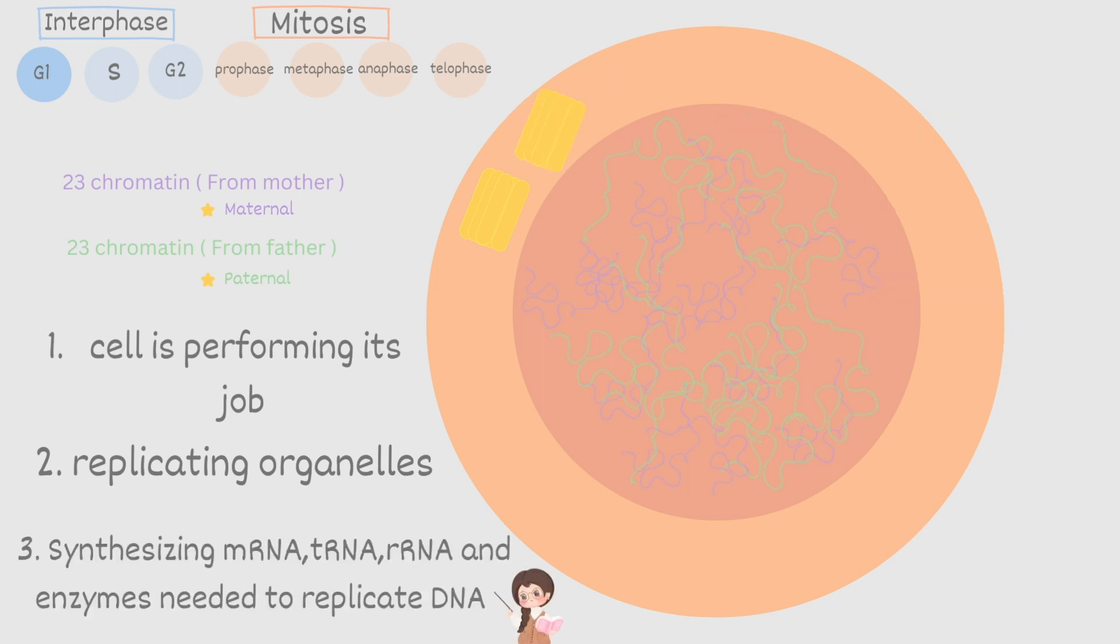And of course by default centromere is referring to the center of the chromosome. Thirdly the cell needs to synthesize or make RNA and enzymes that are needed for DNA replication because DNA replication is our next step. So G1 tends to be the longest phase averaging about 6 to 12 hours.